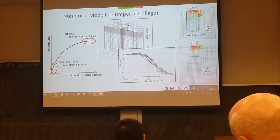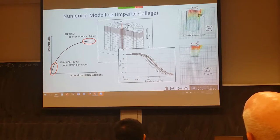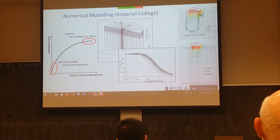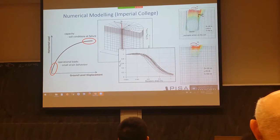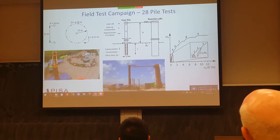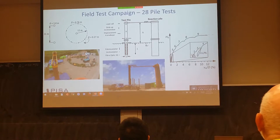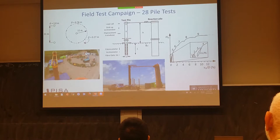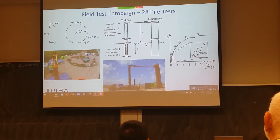An important part of the project was carrying out these finite element analyses and using them to predict all the results from the test program before the testing started on site — these were genuine pre-test predictions. A typical test setup involved a pile in the ground with an extension piece on top, so that we could apply a horizontal load at a height above the pile head representing the sorts of loads you get on a wind turbine. You also need a large reaction pile to apply that load.